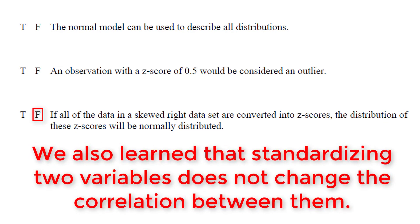If we standardize something, it does not change the correlation, nor does it change the shape. It would still be skewed right. It would still have the correlation it has. We've just standardized it, or we've changed the units, which is what standardizing is.